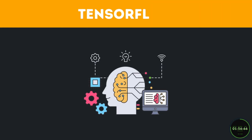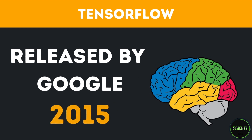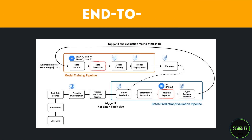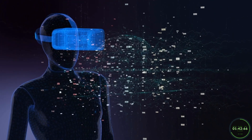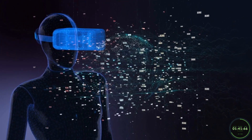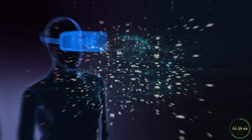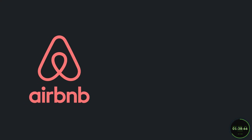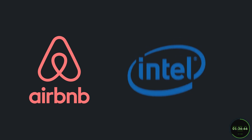TensorFlow is an open-source machine learning framework originally released in 2015 by Google's Brain team. It is commonly referred to as an end-to-end platform because of its ability to take you from building your ML model to deploying that model with relative ease. This framework is mostly used for numerical computation and large-scale machine learning, which is why huge enterprises like Airbnb and Intel rely on it heavily.